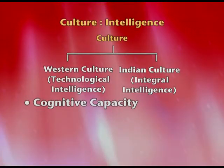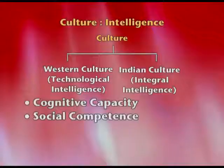Let's look at the four components. Cognitive capacity is the first one — this is exactly the same as what technological intelligence deals with: mind, thoughts, problem solving, mental processes. Second is social competence. This is where integral intelligence or buddhi comes into picture. We call it integral because we are combining all four components and giving a holistic picture of intelligence.